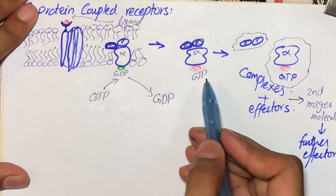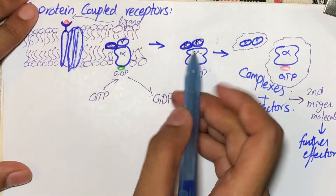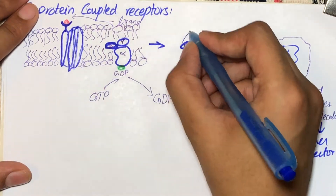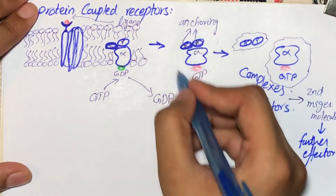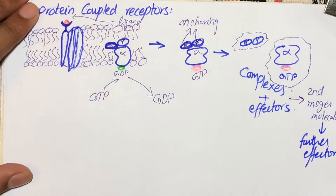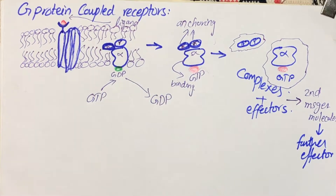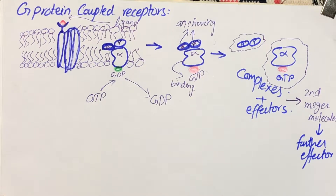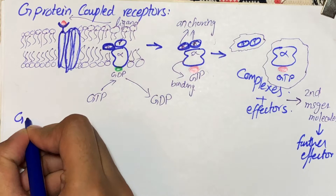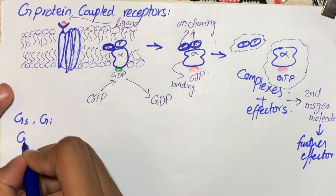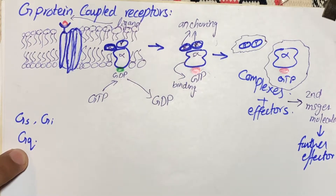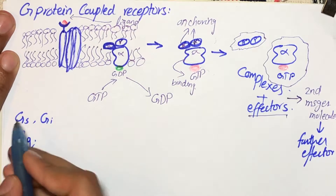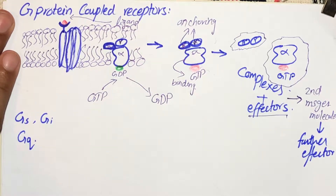If we talk about the individual subunit functions: the alpha subunit is responsible for the attachment or binding of GTP, whereas beta and gamma are responsible for anchoring the G protein in the cell membrane. There are many types of G proteins, but the main ones are GS, GI, and GQ. GS and GI share the same effector, whereas there is a separate effector for GQ.